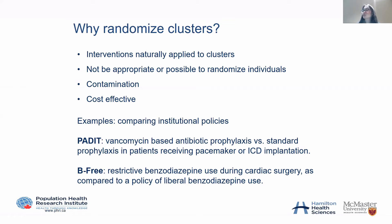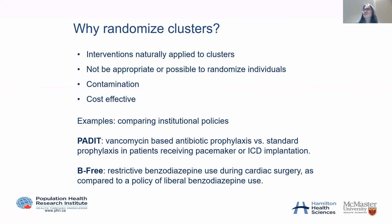Two cluster trials conducted here at PHI: one is the PATHWAY trial, which is already closed, comparing vancomycin-based antibiotic prophylaxis versus standard care for patients who received pacemaker or ICD implantation — an institutional policy comparison that is really hard to conduct at the individual level. Another is the B-FREE trial, which is ongoing, comparing restrictive versus liberal benzodiazepine use for patients receiving cardiac surgery — again an institutional policy evaluation to assess how it affects patient outcomes.